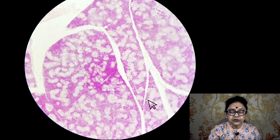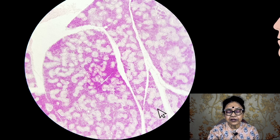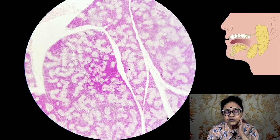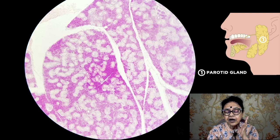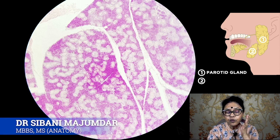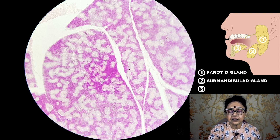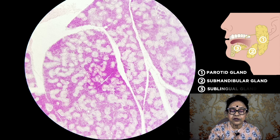The salivary glands are situated by the side of the mouth — that is the parotid gland; underneath your jaw bones — that is the submandibular salivary gland; and beneath the tongue — that is the sublingual salivary gland.